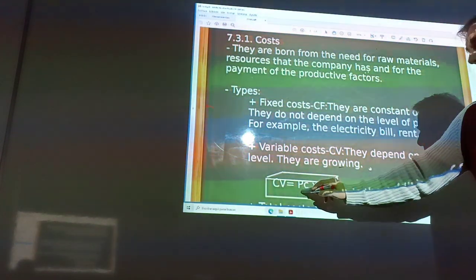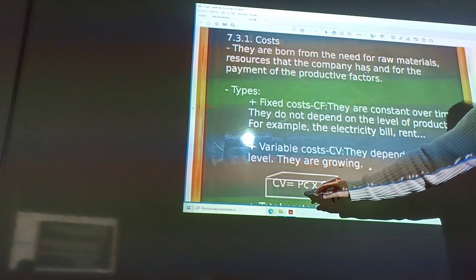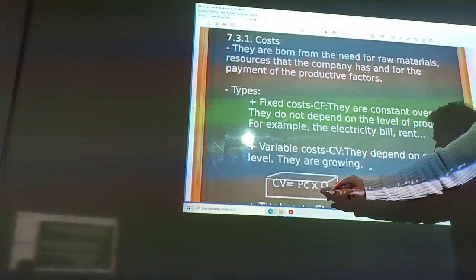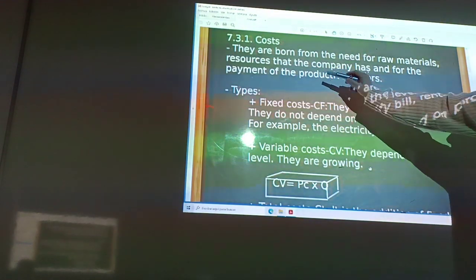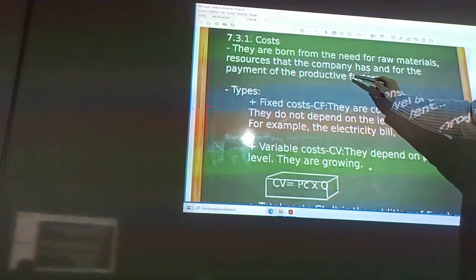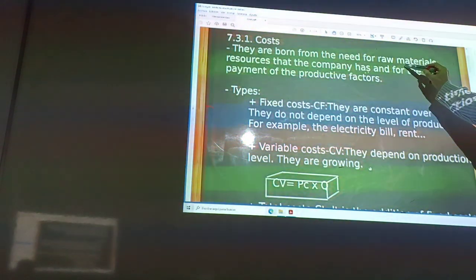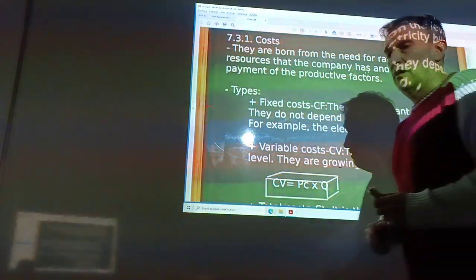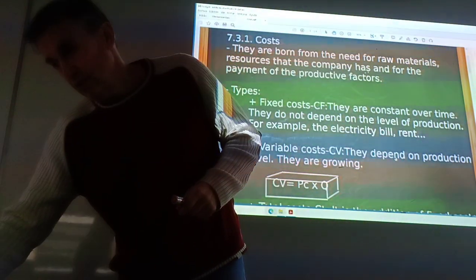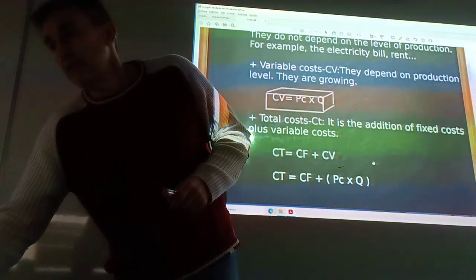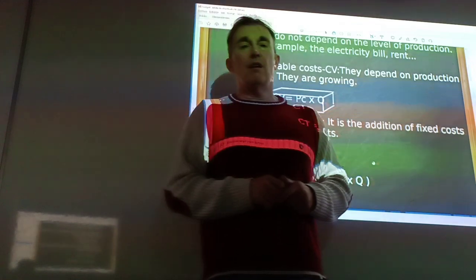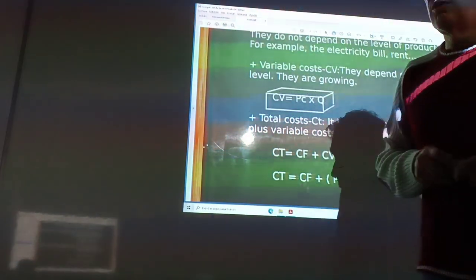Variable cost is price for quantity, for example, product factors, results, materials, and other kinds of products. Total cost is the addition of fixed costs and variable costs.